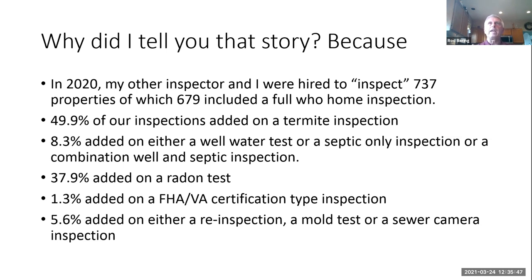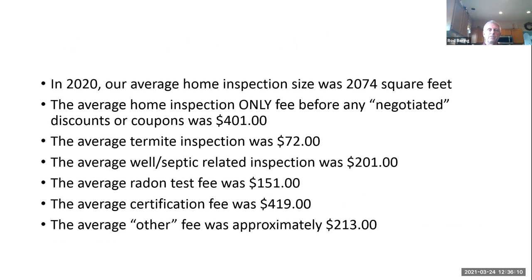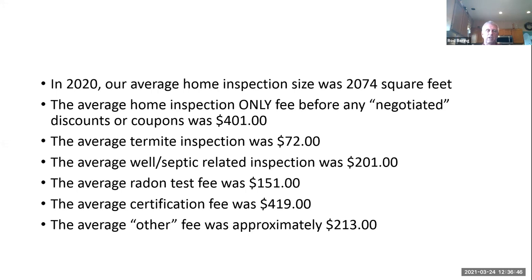This number went way down for us in the last couple of years: 1.3% added on an FHA/VA type inspection. 5.6% — and this has gone up — added either a re-inspection, a mold test, or a sewer camera. In 2020, our average home inspection size was 2,074 square feet. The average home inspection fee, before any negotiated discounts or coupons, was $401 for that size home. The average termite inspection was $72, the average well and septic was $201, the average radon was $151, the certification fee was $419, and the average other fee with no home inspection attached was $213.